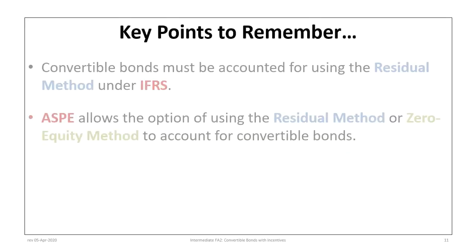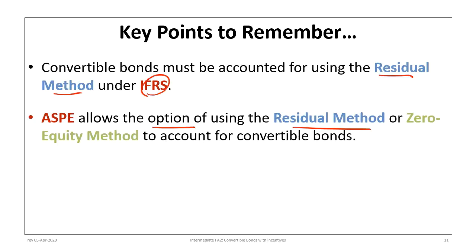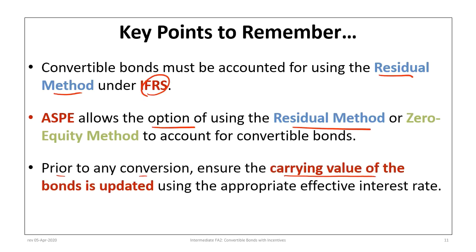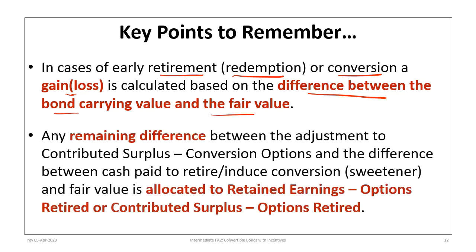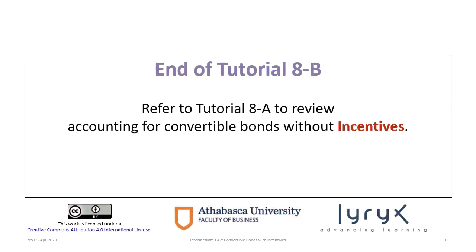To wrap up with points to remember: prior to any conversion, always make sure the carrying value of the bonds is updated through an interest adjustment using the effective rate. In cases of early retirement or conversion, a gain or loss may be calculated based on the difference between the carrying value and the fair value — in this case, we had a loss. Any remaining difference between the adjustment to contributed surplus for the conversion options and the cash paid is allocated to a retained earnings or contributed surplus options retired account, depending on whether you have a net debit or credit. This concludes tutorial 8B. If you need to review convertible bonds without incentives, go back and look at tutorial 8A.